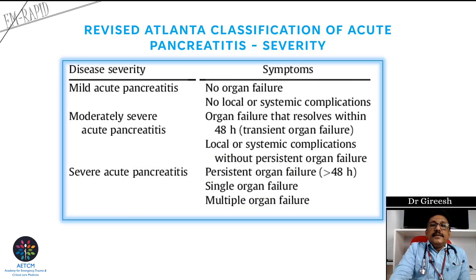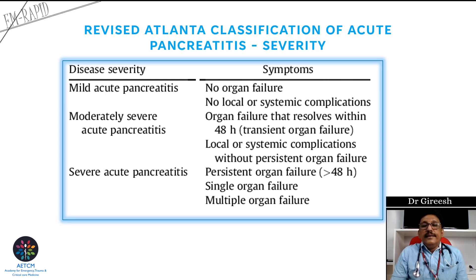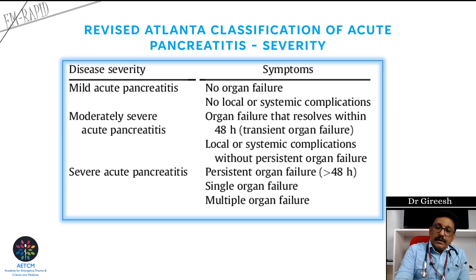The revised Atlanta classification for acute pancreatitis shows the severity. It divides pancreatitis into three classes: mild acute, moderately severe, and severe acute. Mild acute means no organ failure, no local or systemic complications. Moderately severe means organ failure that resolves within 48 hours, or local or systemic complications without persistent organ failure. Severe acute means persistent organ failure or multi-organ dysfunction lasting more than 48 hours.